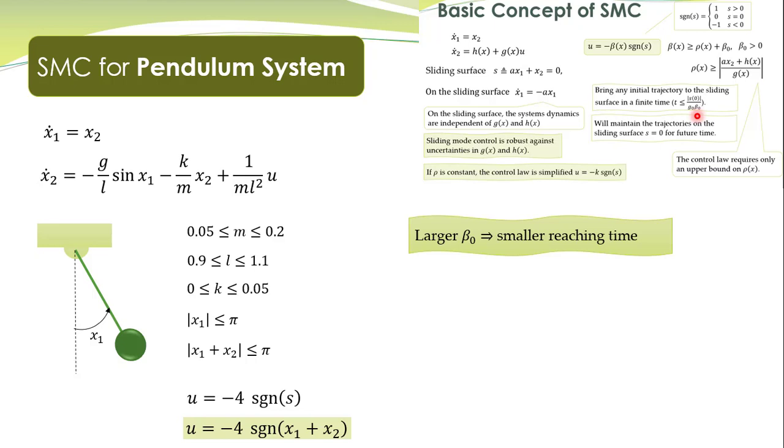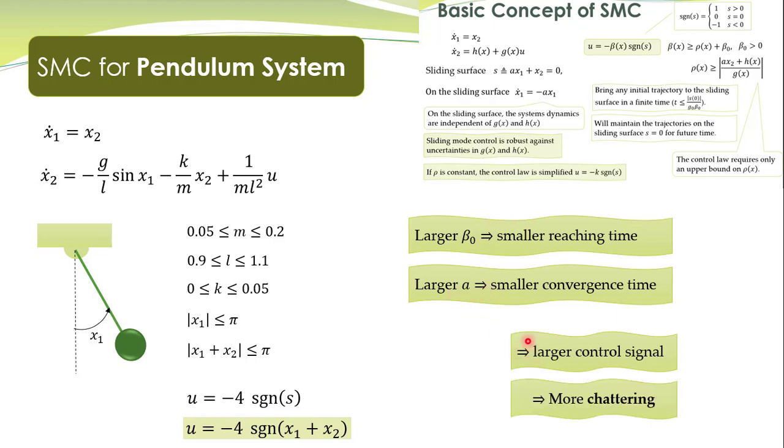What is the effect of a? Larger a means faster convergence. These are two aspects. However, taking larger beta and larger control action means more chattering.